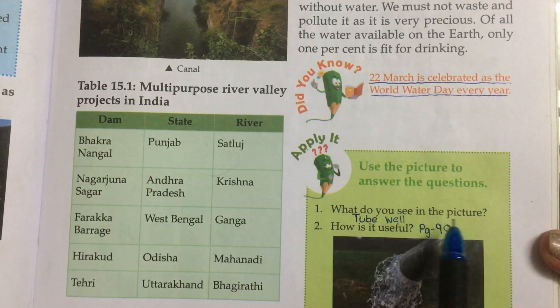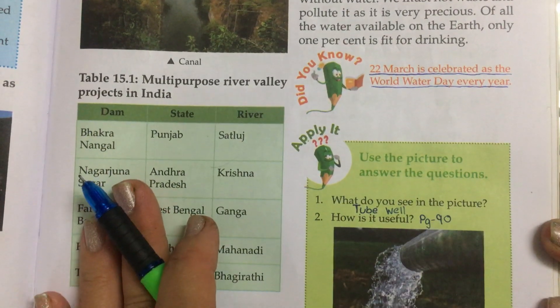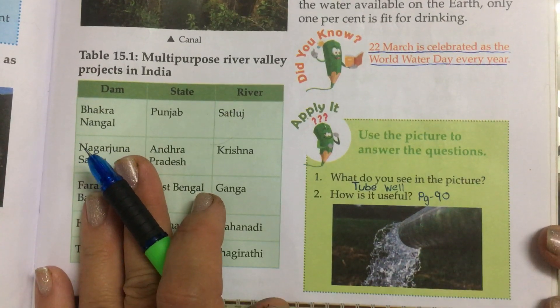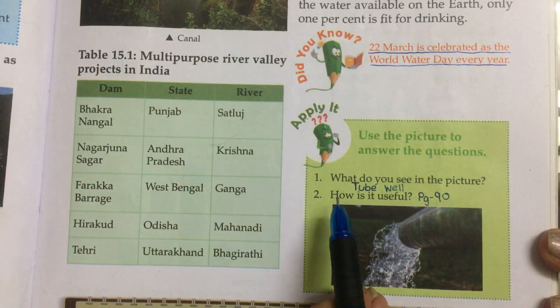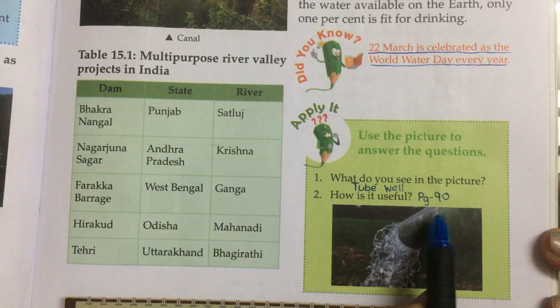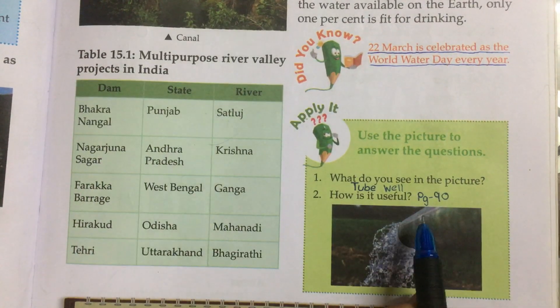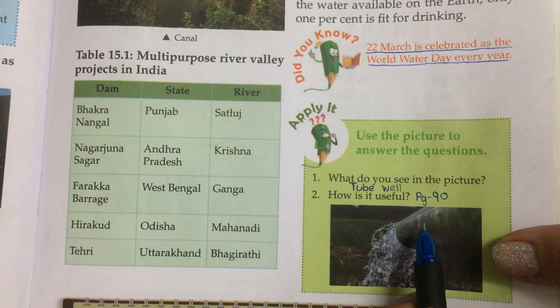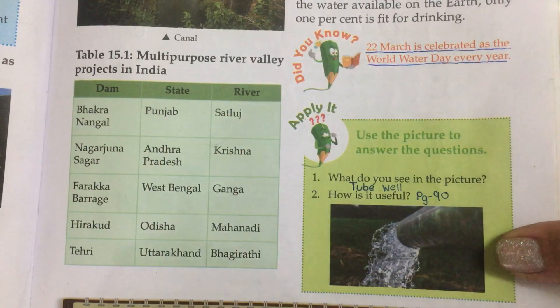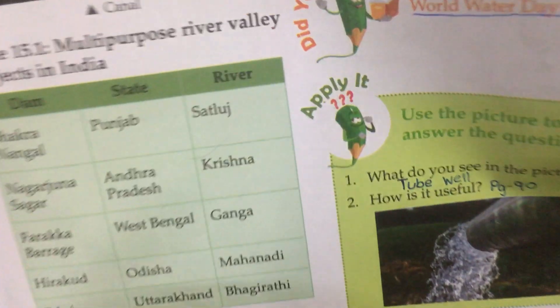As you can see in this picture — what do you see? It is a tube well. And how is it useful? You can refer to page number 90 for the description about tube wells.